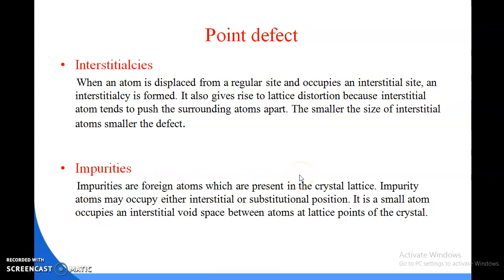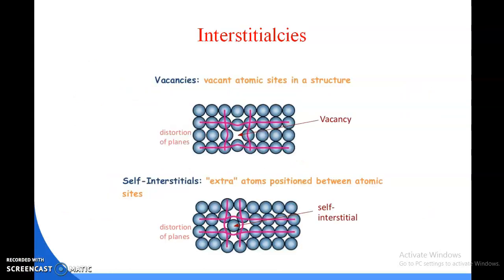Here I am going to show you the interstitializers point defect. We have already studied about vacancies, which are vacant atomic sites in a structure. Here it is showing that this is already vacant, or this is called a distortion of planes also. Next is our self interstitial, where extra atoms are placed or extra atoms or molecules are positioned between atomic structures. This place is vacant but this is not vacant—the extra atom is placed there. This is called self interstitial.